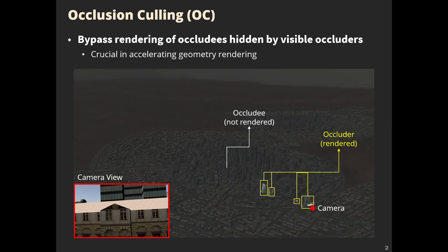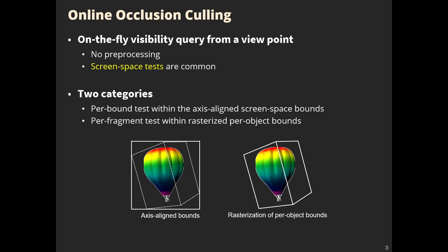There are two major types of occlusion culling. One is to pre-process the visibility of the geometry in the scene. The other is online occlusion culling, which queries visibility from the viewpoint without pre-processing, on the fly. Online occlusion culling tests visibility on screen space. There are two major categories in online occlusion culling.